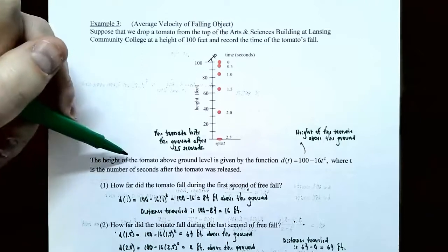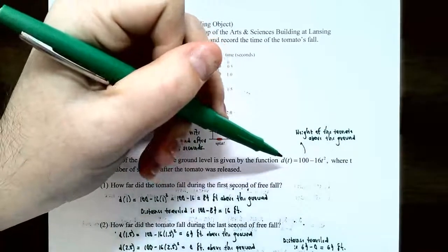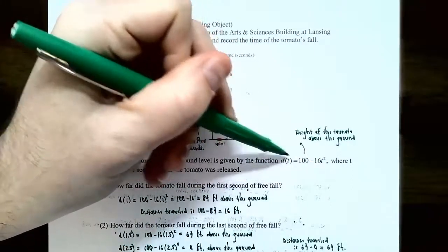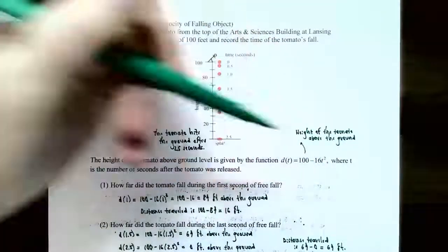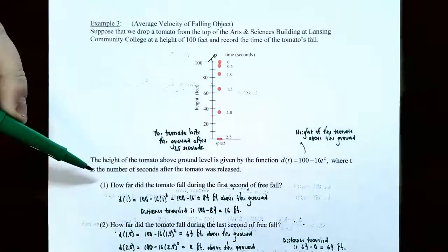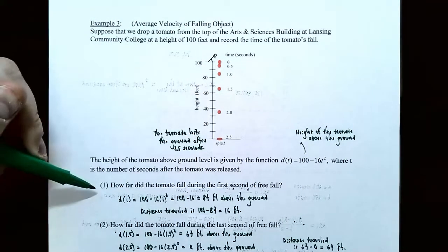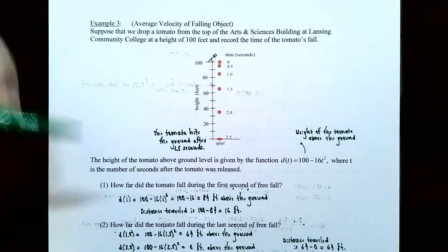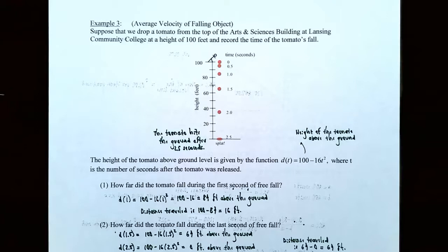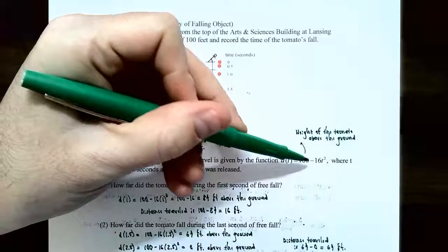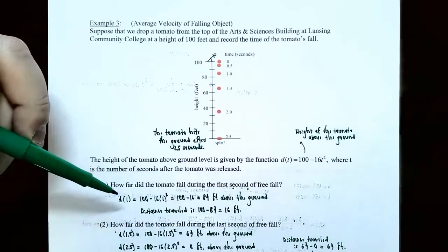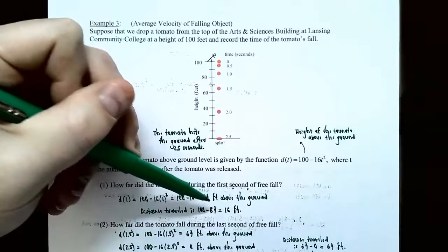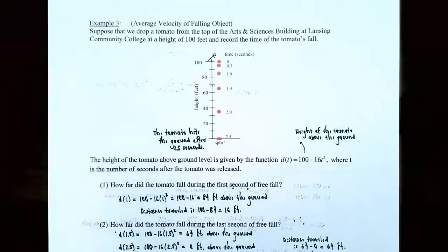Part one: how far did the tomato fall during the first second? Plugging one into the function — 100 subtract 16 times 1 squared — the object is 84 feet above the ground after one second. The distance fallen is 100 feet subtract 84 feet, so the object has fallen 16 feet.